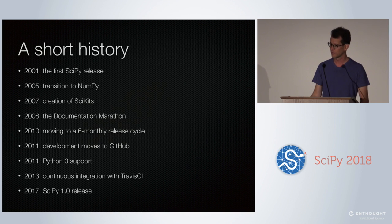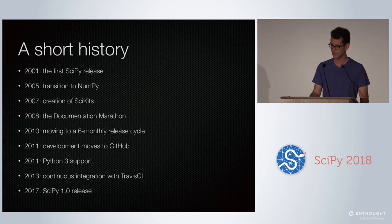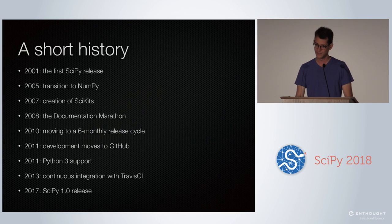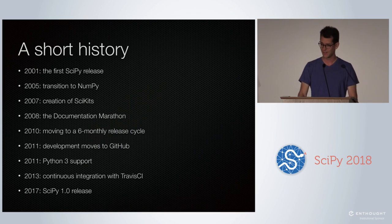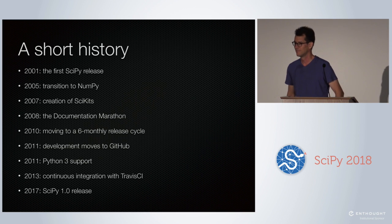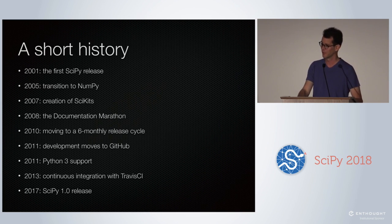Then we moved to GitHub. We were one of the first libraries to support Python 3, one of the first to adopt Travis CI with continuous integration. And then it took another four years before we finally set version 1.0.